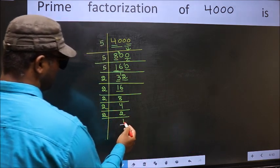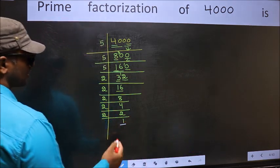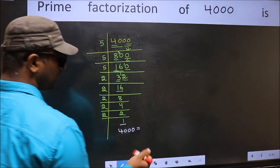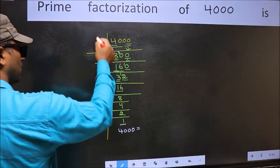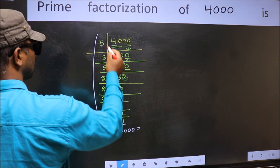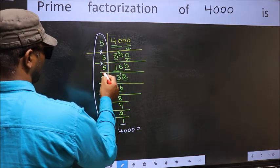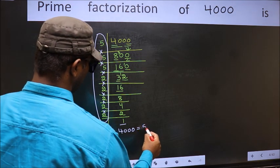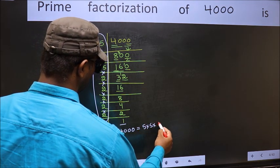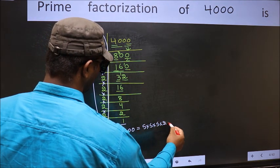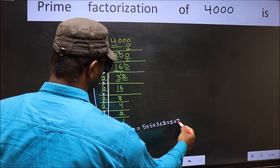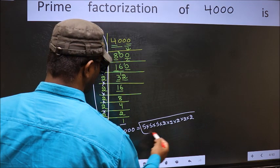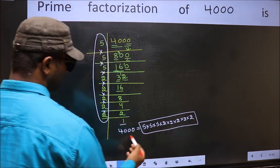So we got 1 here. So the prime factorization of 4000 is the product of these numbers, that is 5 × 5 × 5 × 5 × 2 × 2 × 2 × 2 × 2 × 2 × 2 × 2 × 2 × 2 × 2. This is the prime factorization of 4000.